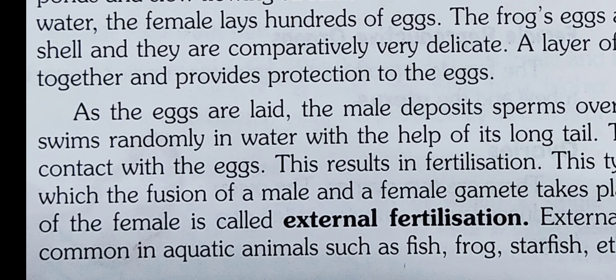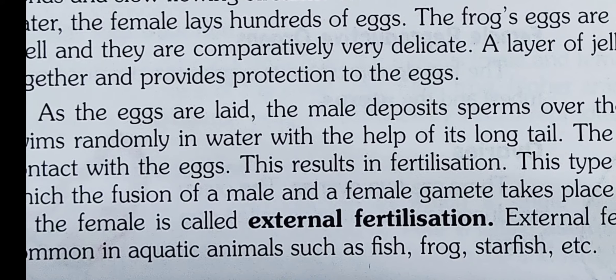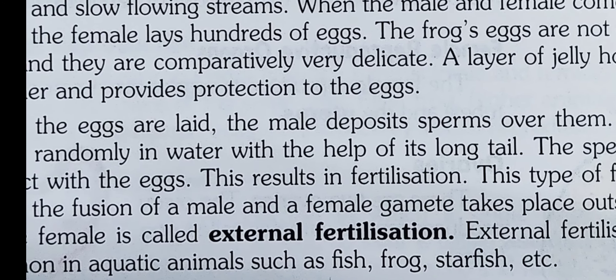This type of fertilization, in which the fusion of male and female gametes takes place outside the body of the female, is called external fertilization. When fertilization takes place inside the body, it is known as internal fertilization. External fertilization is common in aquatic animals such as fish, frog, and starfish.